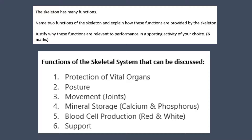There are six different functions of the skeletal system that you can see on the screen now, and you can discuss any two of these six. Always try to think which are going to be easiest to discuss in terms of a sporting activity. We're going to be discussing rugby as an example, so we have chosen protection of vital organs and movement, as these two functions are probably the easiest to explain in terms of their relevance to performance in rugby.